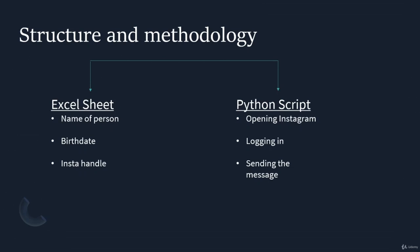The Python script consists of three main steps. The first step would be opening Instagram. The second step would be logging in to your Instagram account. The third and final step would be sending the message. These three steps are in order and they are going to be three different functions — three functions to carry out each of those three tasks. I'll teach you how to do the Excel sheet first, and later how to code those three functions.